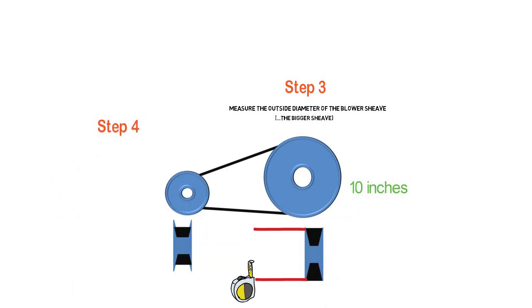Next, we're going to measure the motor's shiv. Now, this one, you have to be a little bit more careful. You have to measure where the belt is riding, not the outside diameter of the shiv itself. Look at the red line. See how they're stopping where the back of the belt is? That's the point you want to measure. In this case, we have three and a half inches. Pretty simple so far.